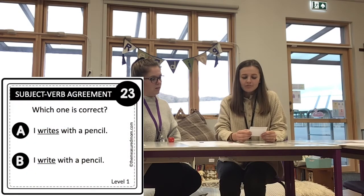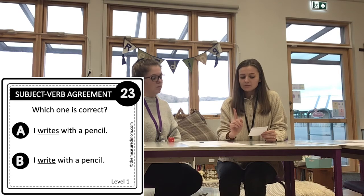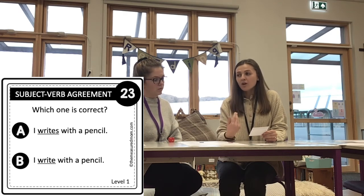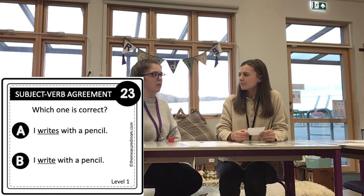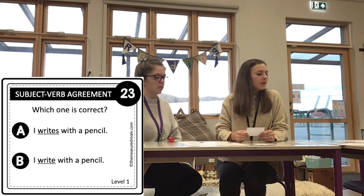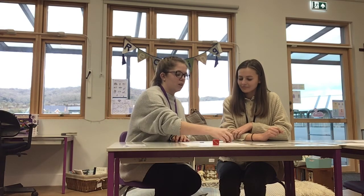Card 23: 'I writes with a pencil' or 'I write with a pencil.' It would be 'I write with a pencil' — 'I writes' doesn't sound right when you say it out loud. Number 23 B — correct! I'm nearly at the end now — and I've finished the game! I'm sorry Miss Jennings, I did beat you on that one. But I feel a lot more confident about subject-verb agreement now. I hope it helps you at home too.